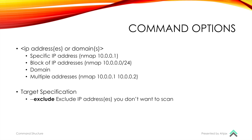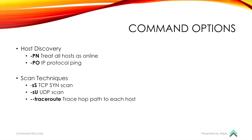You can also do multiple addresses separated by a space. Under target specification, there is --exclude, which can exclude IP addresses you do not want to scan. For example, if you're scanning your home network and you know that you don't want to scan your gaming device, your desktop, and your smart TV because you already know what those are, you can use --exclude and it will exclude those IP addresses.